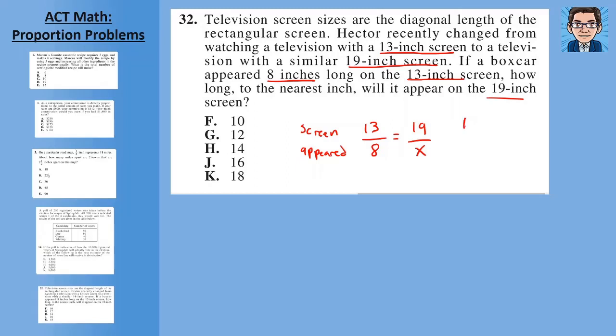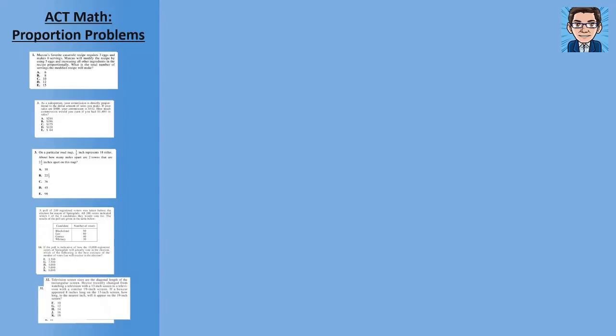So on a 19 inch screen, what will it appear to be? And then just cross multiply 13x equals 19 times eight, which is 152. Divide both sides by 13 and you get x equals 11.69 something to the nearest whole number. Round it to 12 and get G as our answer.